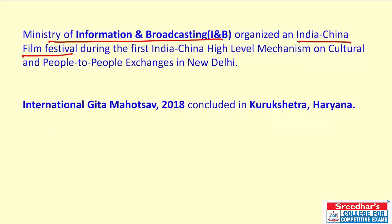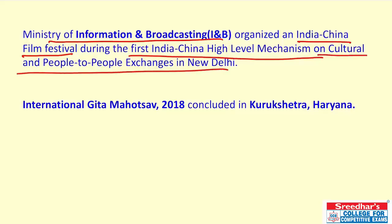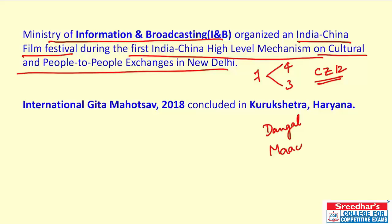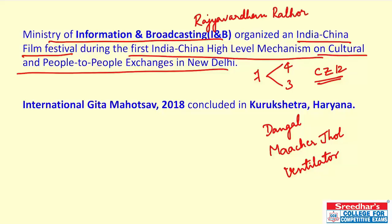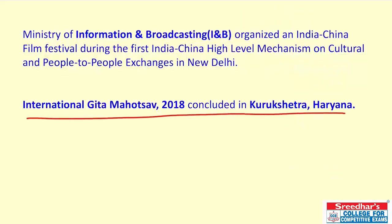The Ministry of Information and Broadcasting organized the India-China Film Festival, the first of its kind, during the First India-China High Level Mechanism on Cultural and People-to-People Exchanges in New Delhi. A total of seven films were screened — four Chinese and three Indian. The opening film was 'CZ12' (Chinese Zodiac), and the Indian films were Dangal (Hindi), Maacher Jhol (Bengali), and Ventilator (Marathi). The Information and Broadcasting Minister is Rajyavardhan Rathore.